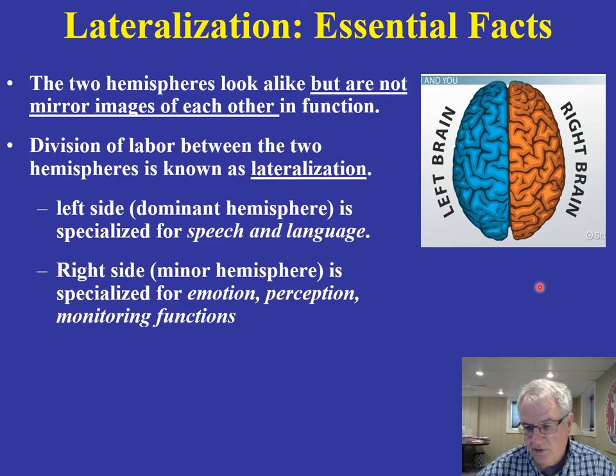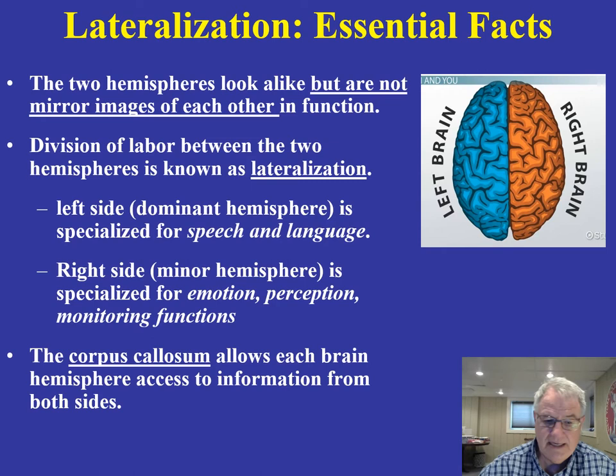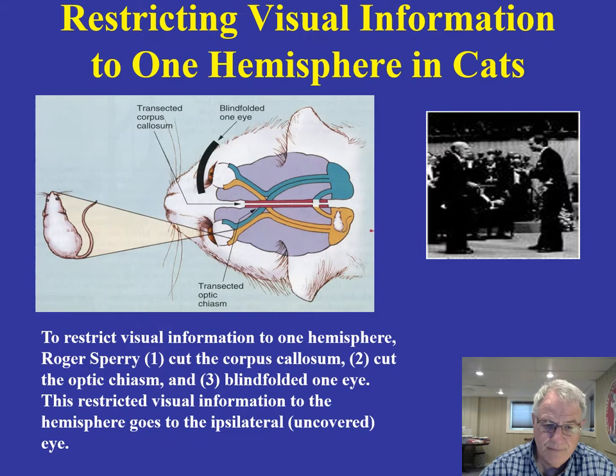You would just reverse these things in the case of a left-handed person, where the right hemisphere would be the dominant hemisphere, specialized for speech and language. Because most of us are right-handed, we'll be referring to the left hemisphere as the dominant hemisphere. The corpus callosum is allowing the brain hemispheres access to information from both sides of the brain — that's a very important function it serves.